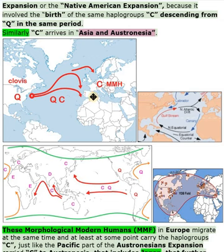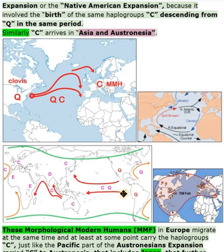Similarly, haplogroup C arrives in Asia and Austronesia. These morphological modern humans (MMF) in Europe migrate at the same time and at least at some point carry haplogroup C, just like the Pacific part of the Austronesian expansion carried C to Austronesia — which includes Japan — and further carried it to Asia. All carried Q before C.